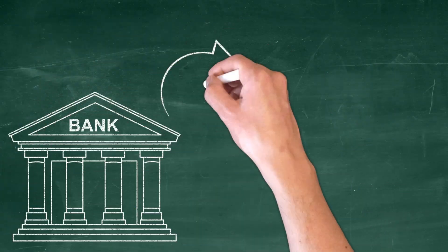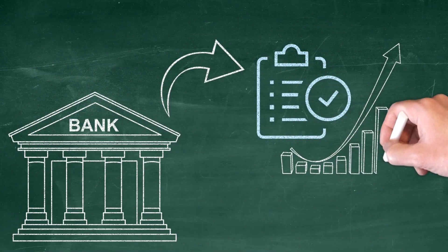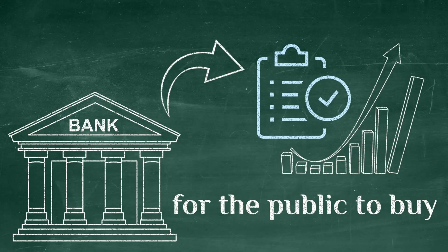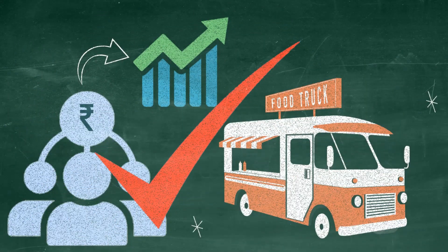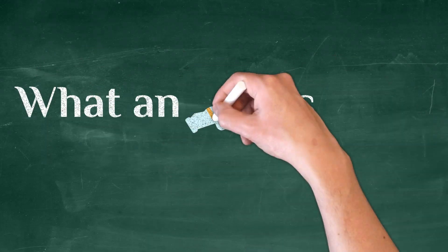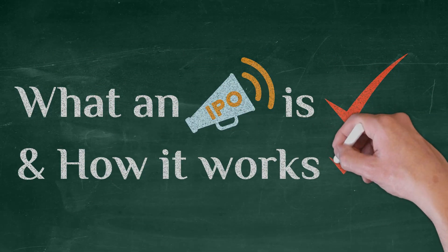The investment bank then lists the shares on a stock exchange for the public to buy. Investors can now buy shares of Manav's food truck business. Now you know what an IPO is and how it works.